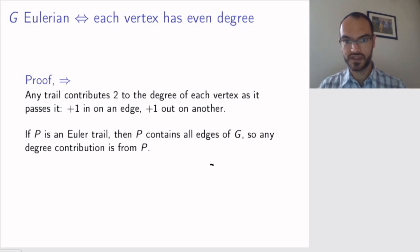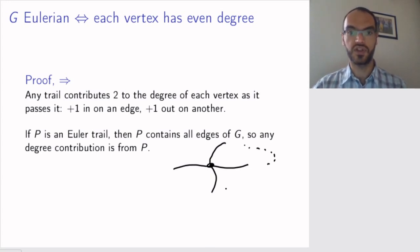So if I have a vertex here, and then the trail comes in, it comes out again. That is a contribution by 2. Maybe the trail goes around the graph and comes back to this vertex, but then it still has to go out again on a new edge. So I am contributing a new 2 and so on. So the contribution is even.